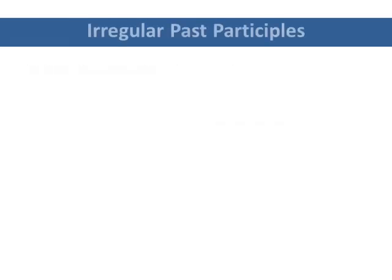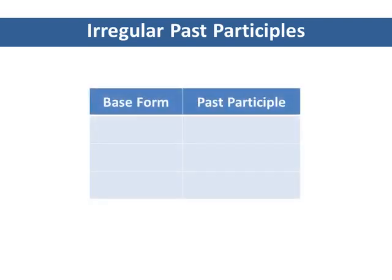But some verbs have an irregular past participle form. For example, weave becomes woven, buy becomes bought, and begin becomes begun.